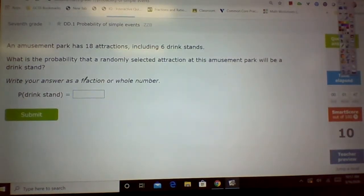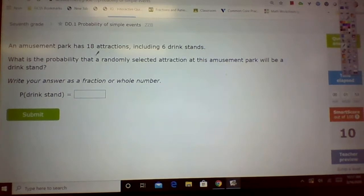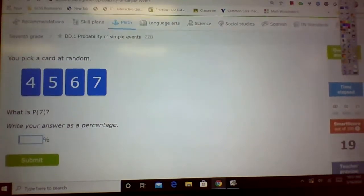All right, let's look at this one. An amusement park has 18 attractions, including six drink stands. What is the probability that a randomly selected attraction at this amusement park will be a drink stand? How many total attractions? 18. How many drink stands? Six. So that would be six 18. Again, I could reduce that, and that would come down to one-third. But if you don't have to and you don't want to make a mistake, you don't.